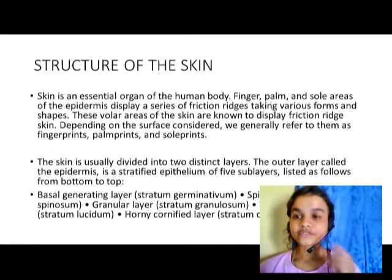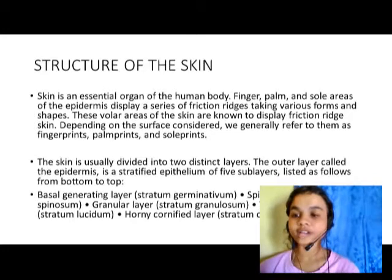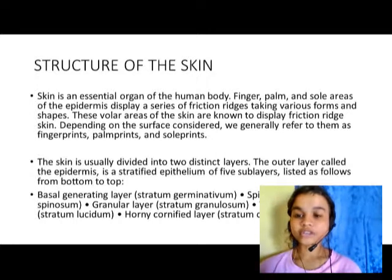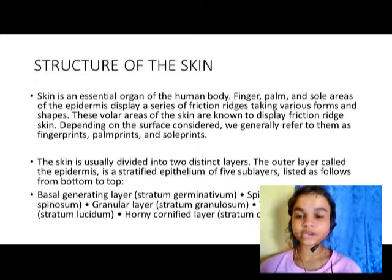First we will talk about the structure of the skin. Skin is an essential organ of the human body. The finger, palm, and sole areas of the epidermis display a series of friction ridges taking various forms and shapes. These molar areas of the skin are known to display friction ridge skin depending on the surface considered. We generally refer to them as fingerprints, palm prints, and sole prints.